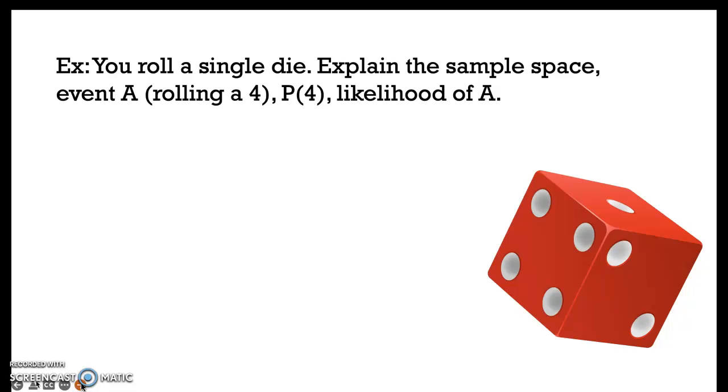So let's do one more example. You roll a single die, as shown in this little graphic here. Explain the sample space, the event A which is rolling a 4, the probability of 4, and the likelihood of event A.